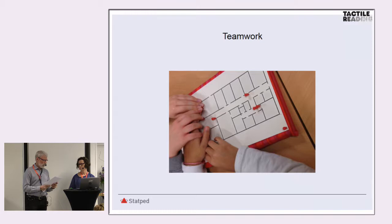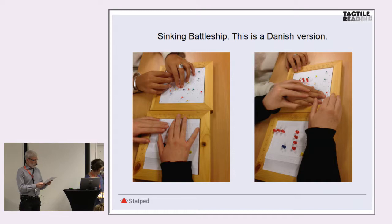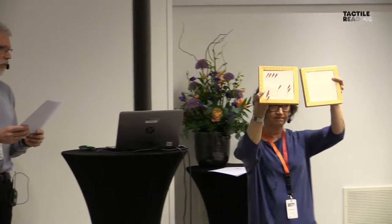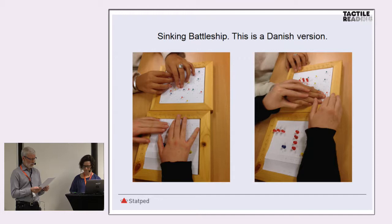To help the pupils understand coordinates, we played the sinking battleship game, which is a guessing game for two players. In our course, we practiced it for teams of two pupils playing together. It is displayed on a grid paper on which players' ships are marked with needles. The location of the ships is hidden from the other players. Players alternate turns calling shots at the other players' ships, and the objective of the game is to destroy the opposing players' fleet.